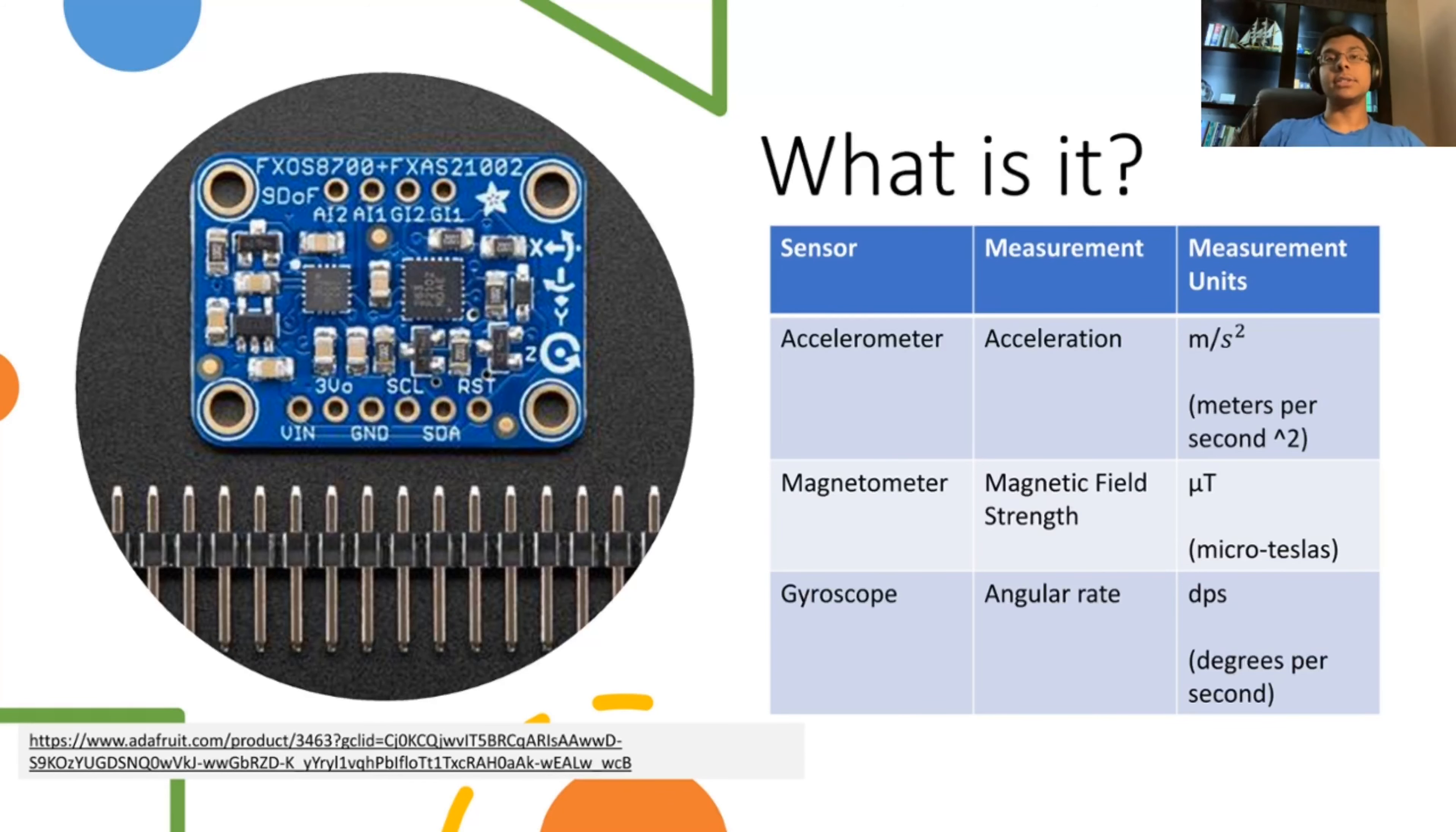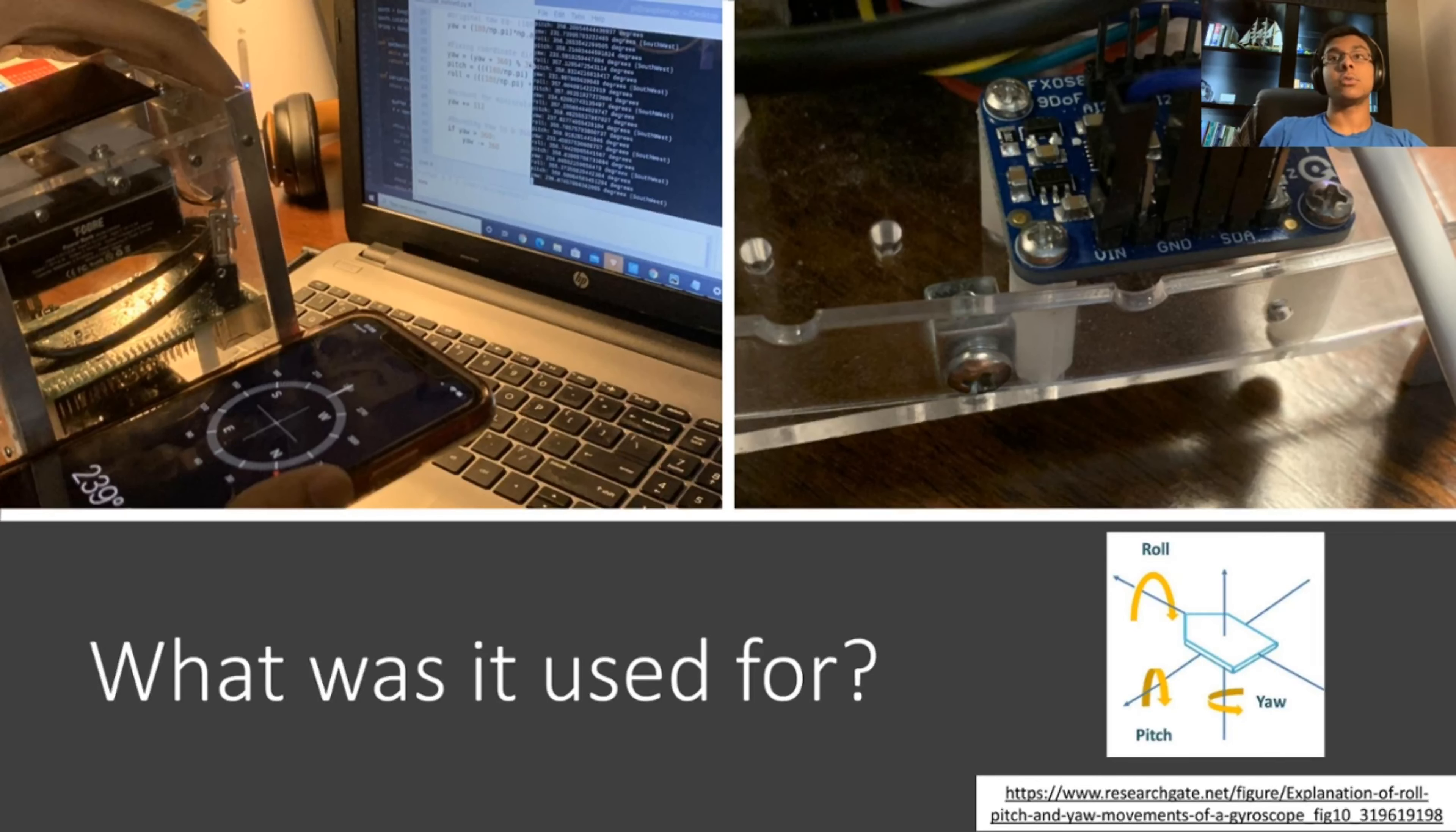In our case, we are using an Adafruit 9DOF, degrees of freedom, NXP precision board, which is shown on the left, and the table on the right showcases the specific sensors that are integrated onto this IMU board, and consequently, the types of measurements the IMU board offers. Now, as I said previously, this IMU board was a crucial component of our CubeSat. For our purposes,